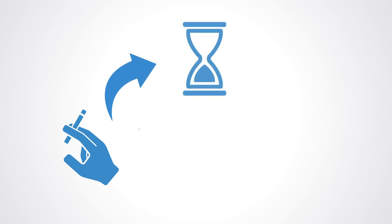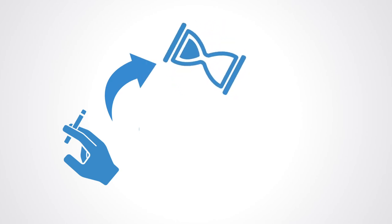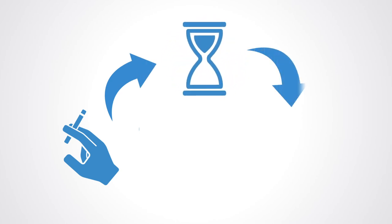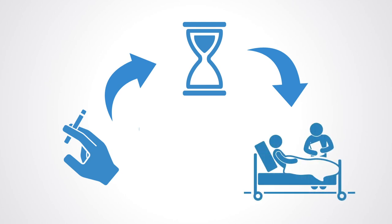Another generic system archetype is a balancing process with delay. This archetype explains the system in which the response to the action is delayed. If the members do not perceive the delayed feedback,